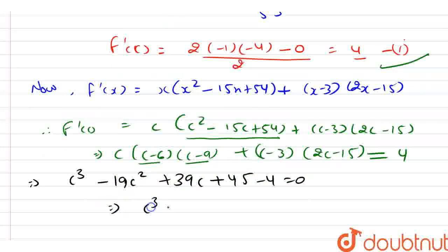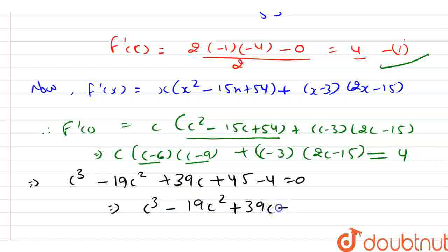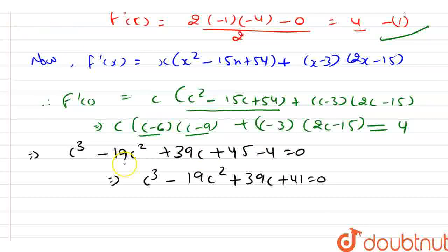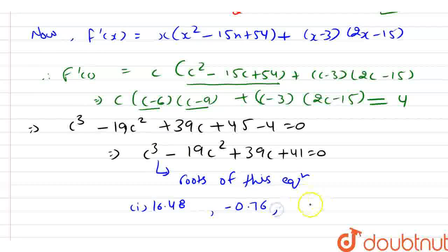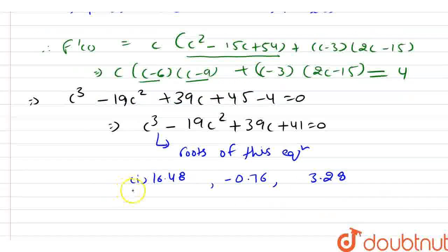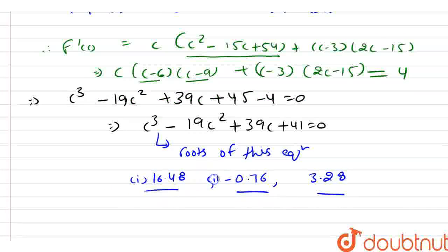From here we have c³ - 19c² + 39c + 41 = 0. Now, from here it is a cubic equation. The roots of this equation are 16.48, -0.76, and 3.28. These are the roots of this cubic equation.